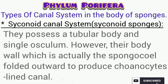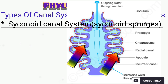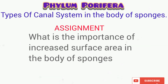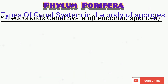The syconoid sponges possess a tubular body and a single osculum, like the asconoid sponges. However, they possess a folded outward body wall, which produces the choanocyte-lined canal. This folding of the wall of the syconoid and leuconoid sponges actually increases their surface area. Research on the importance of this surface area and send your answers to biologyaccess@gmail.com.